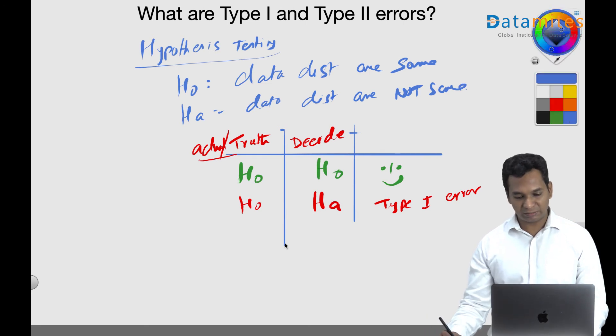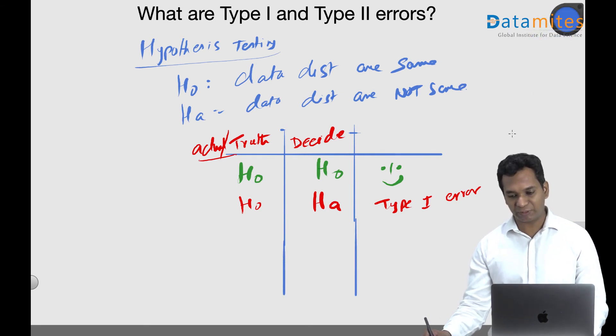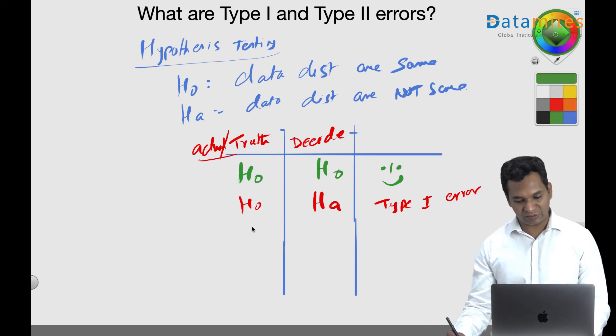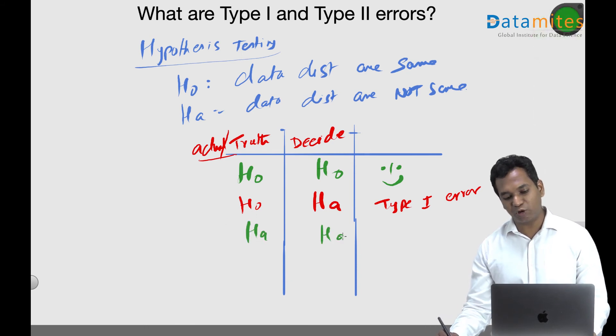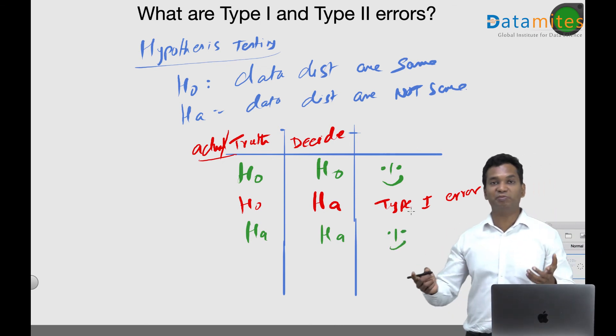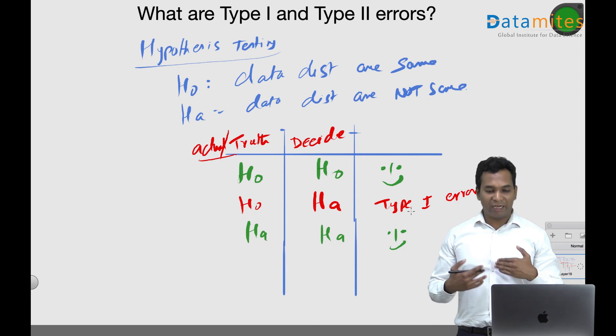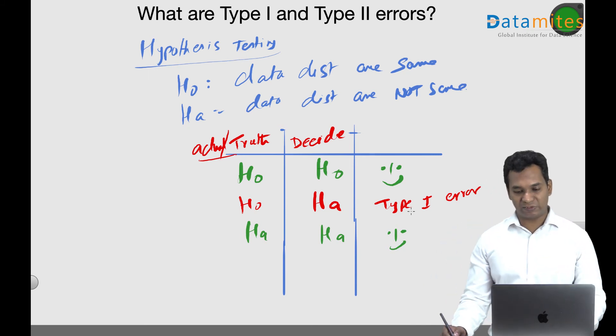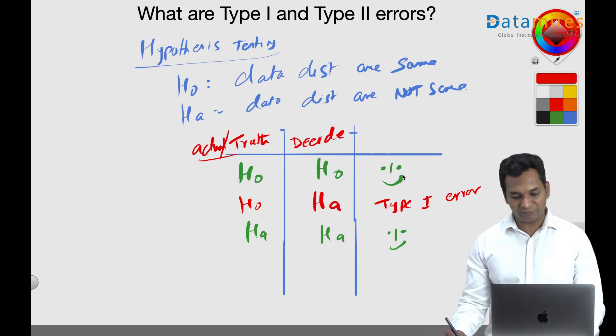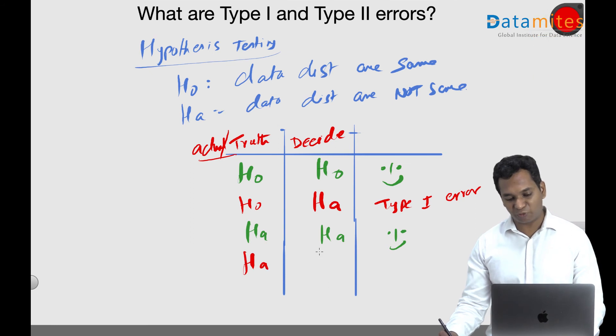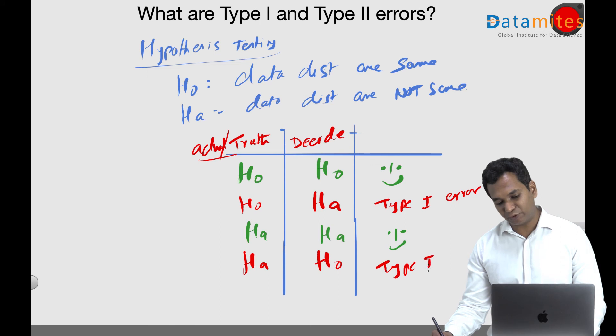The other situations: let's say the actual is alternate hypothesis and you again decided alternate hypothesis. Again, happy situation because actual is alternate hypothesis and you have concluded alternate hypothesis, so no problem. But when the actual is alternate hypothesis and you wrongly decide null hypothesis, then it is called Type 2 error.